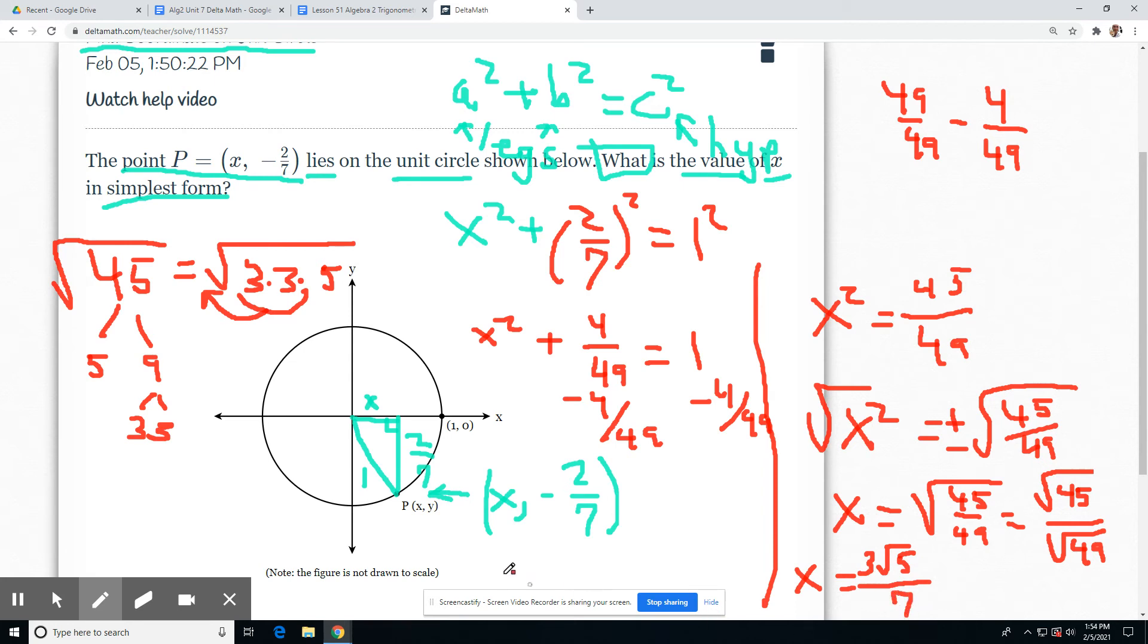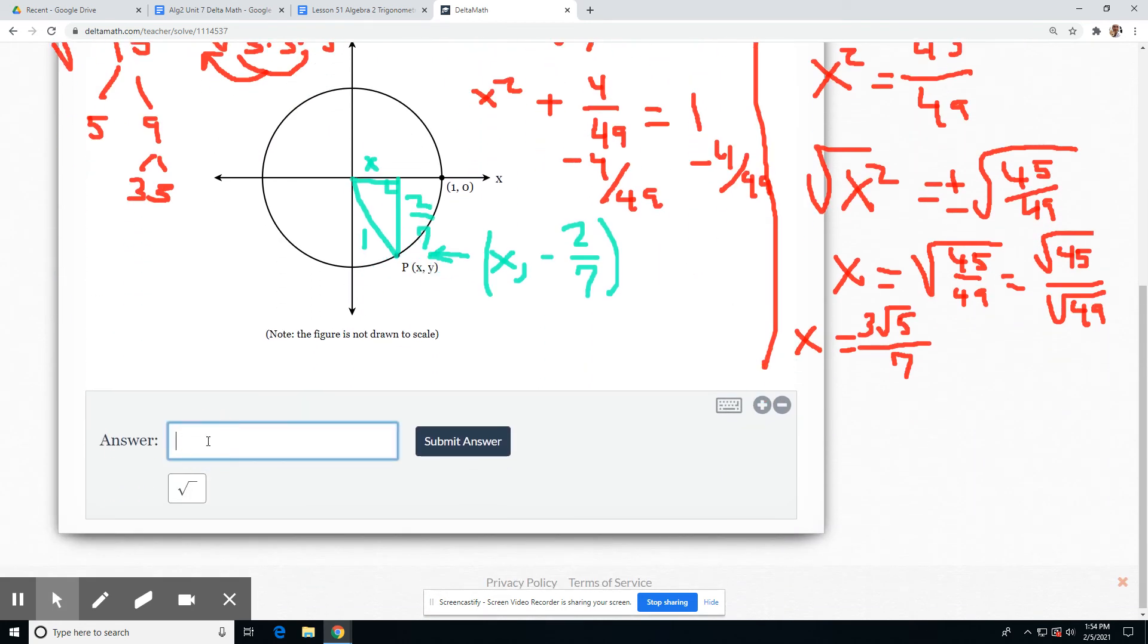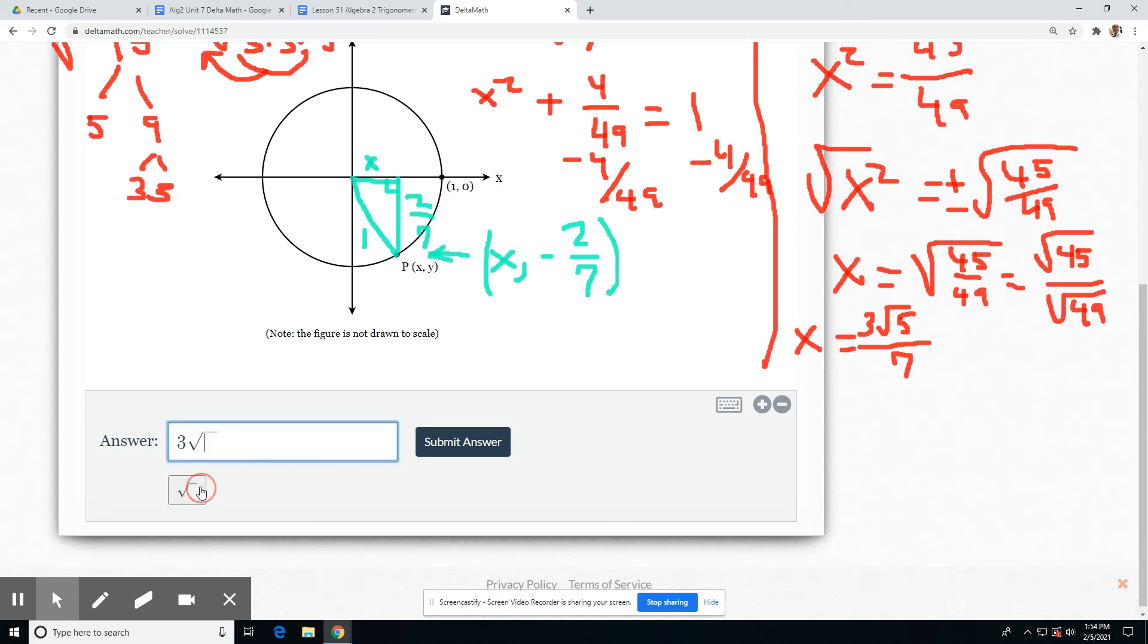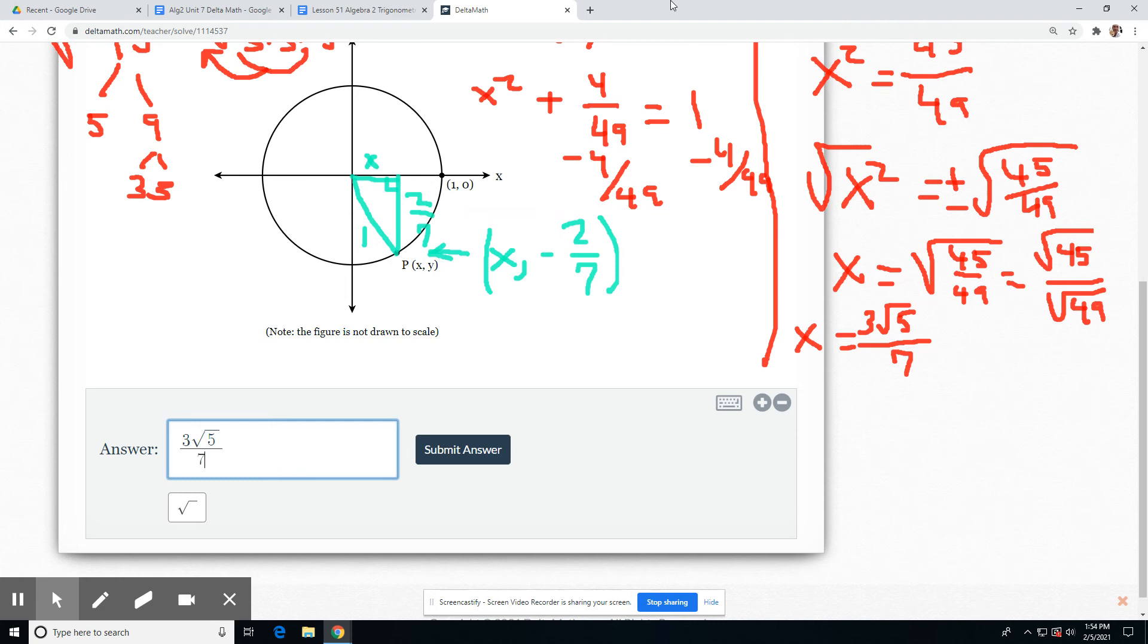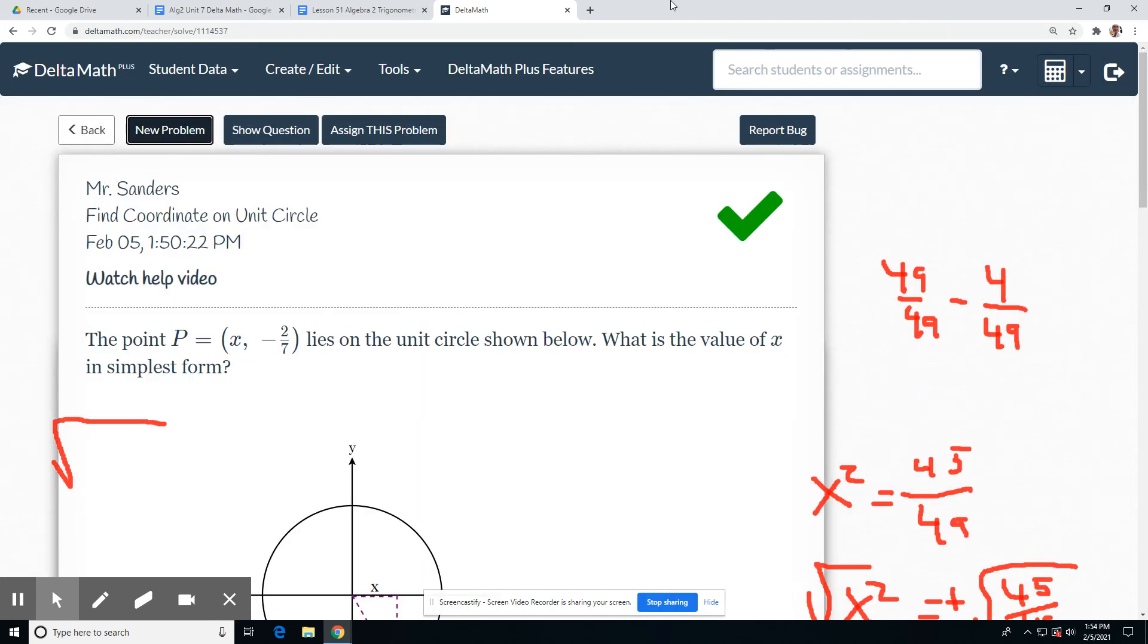3 radical 5 over 7 is our X. They wanted it in simplest form. 3 radical 5 divided by 7. Got it.